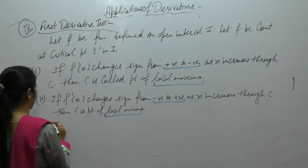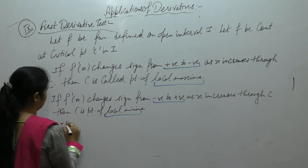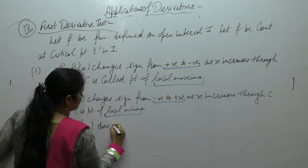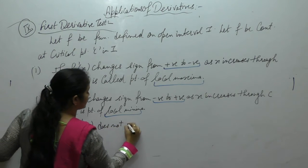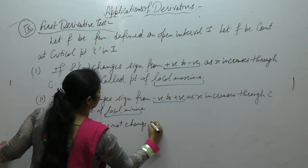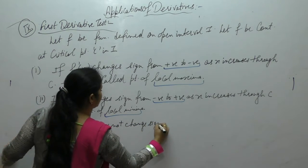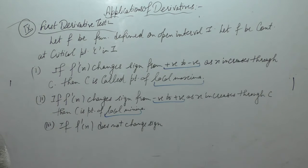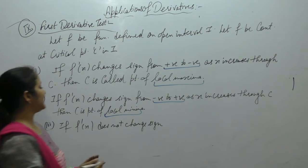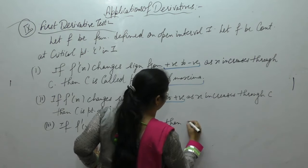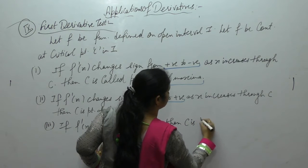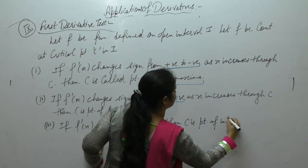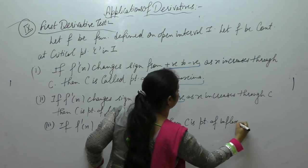If f'(x) does not change sign — if it goes from negative to negative or positive to positive — then c is called a point of inflection.